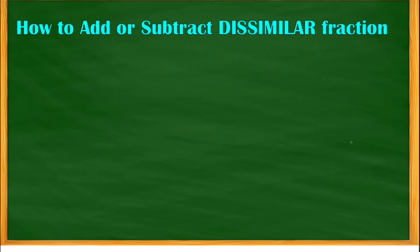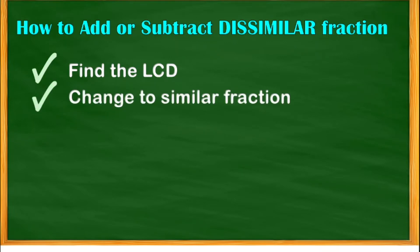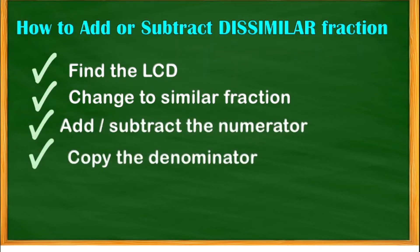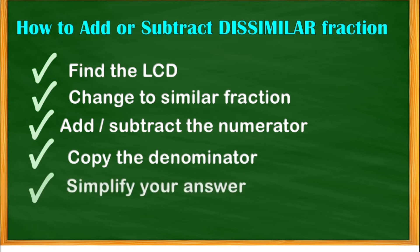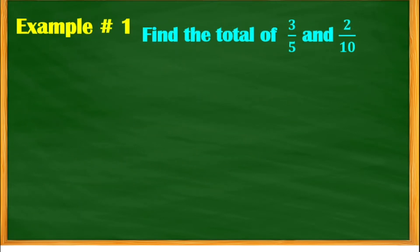Now we're going to add or subtract dissimilar fractions. The steps are: first, find the LCD of the given denominators of the two fractions. Then change the dissimilar fractions to similar fractions. Then add or subtract the numerator, copy the denominator, and don't forget to simplify your answer.